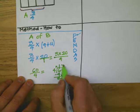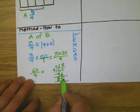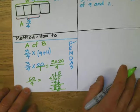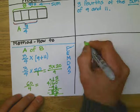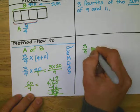So now let's answer the question. So we know that three-fourths of nine plus 11 equals 15.